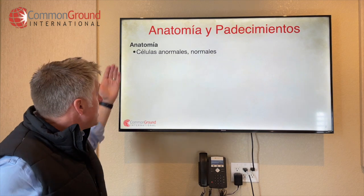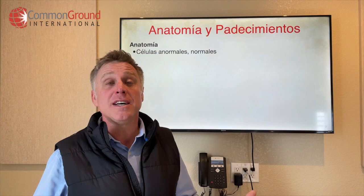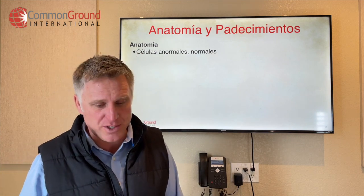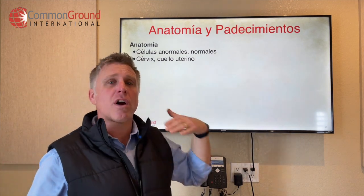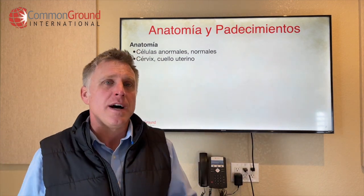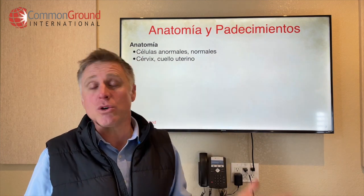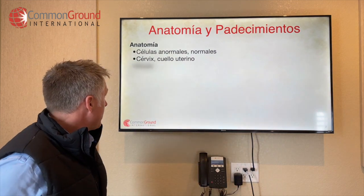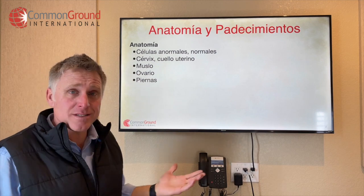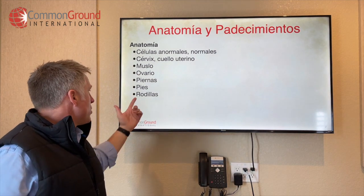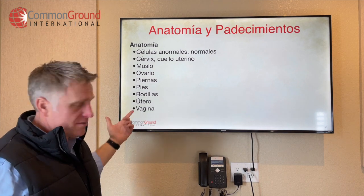Anatomía. Células anormales and normales — células normales, normal cells; células anormales, abnormal cells. Cervix or cuello uterino — there are a few other words for cervix, but these are pretty common ones. Cervix is a little higher register; cuello uterino is pretty commonly understood. Muslo — thigh. Ovario — ovary. Piernas — legs. Pies — feet. Rodillas — knees. Utero — uterus. Vagina — vagina.